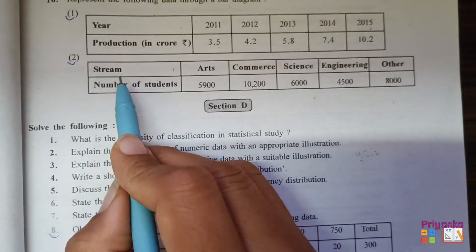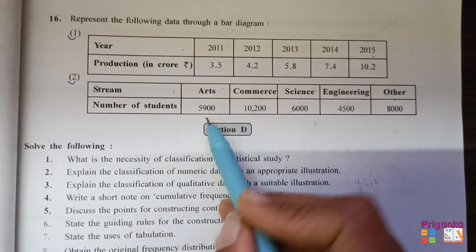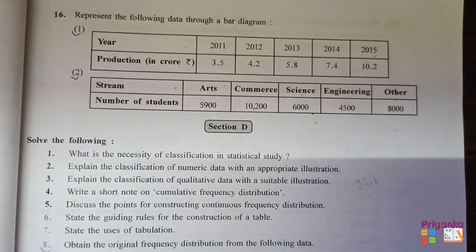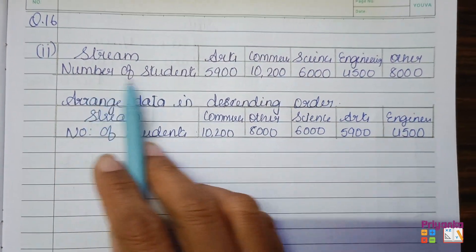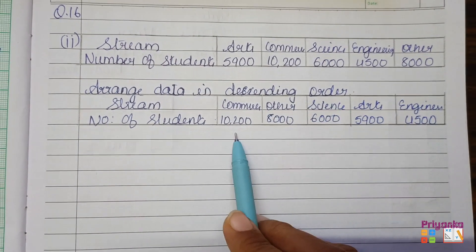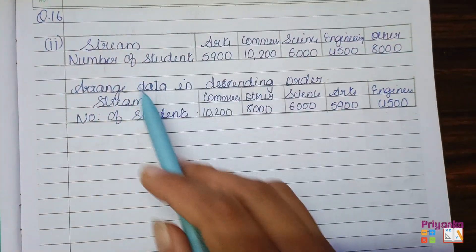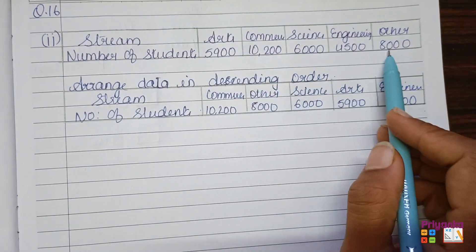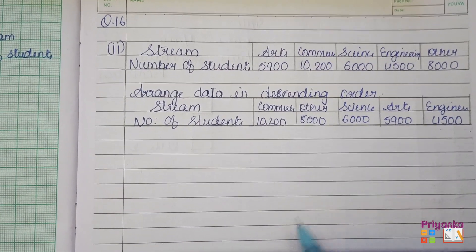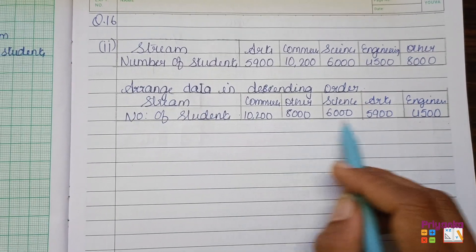The second question gives the streams: art, commerce, science, engineer, and others, along with the number of students. For this, first arrange the table in descending order — maximum first, least last. This rearrangement can only be done when categorical data like streams is given, not when years are given, as was the case in the first question.